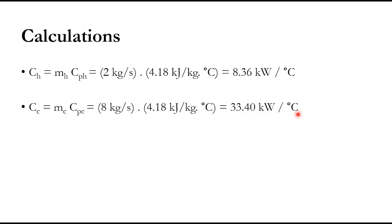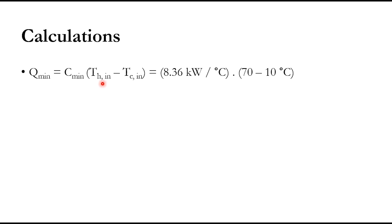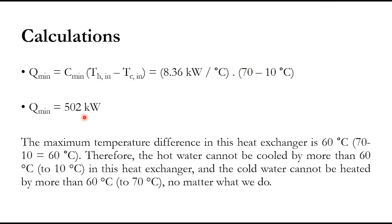Next, calculate q_max: q_max = C_min·(T_{h,in} − T_{c,in}) = 8.36 × (70 − 10) = 502 kW. This means the maximum heat transfer that can take place in this heat exchanger is 502 kW — the limiting case, which is usually not practically achievable. The maximum temperature difference is 60°C, meaning the hot water cannot be cooled by more than 60°C.